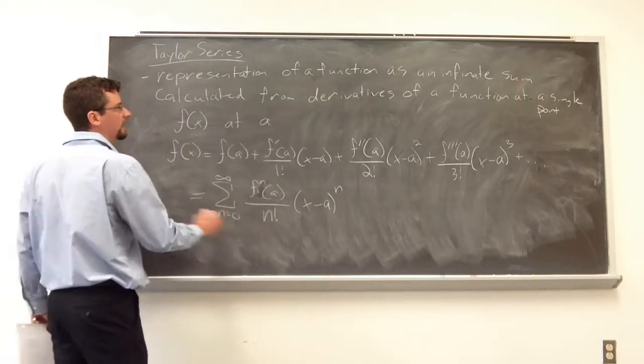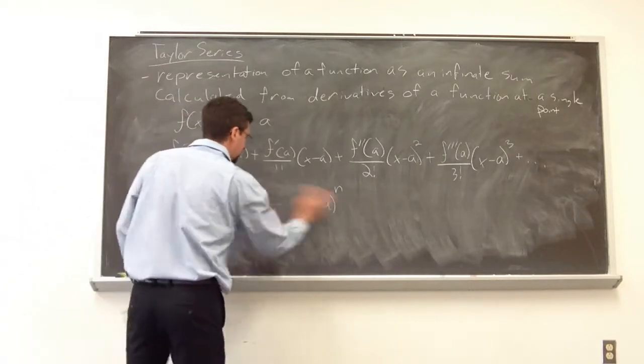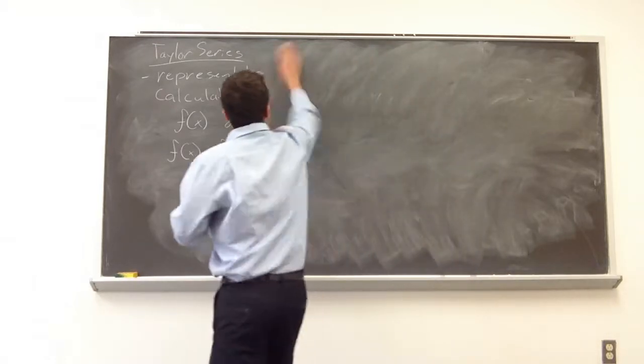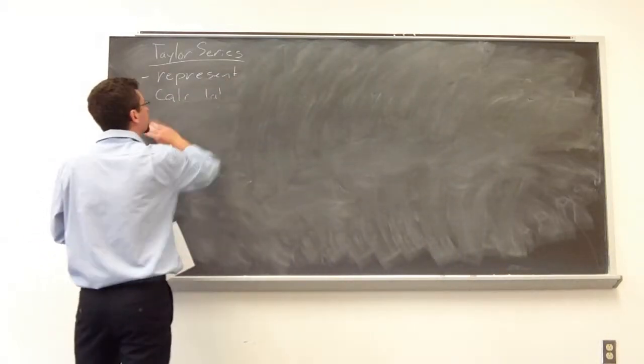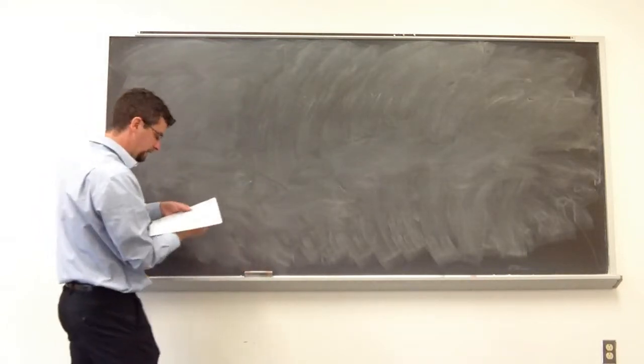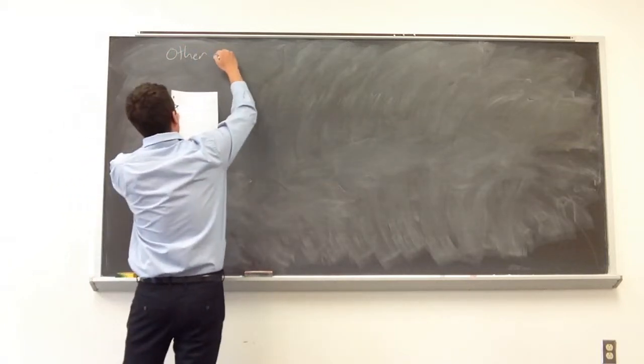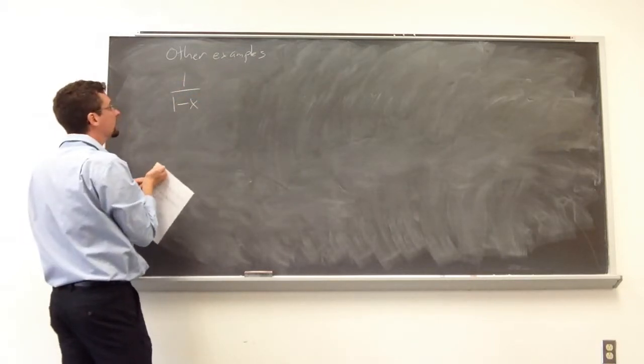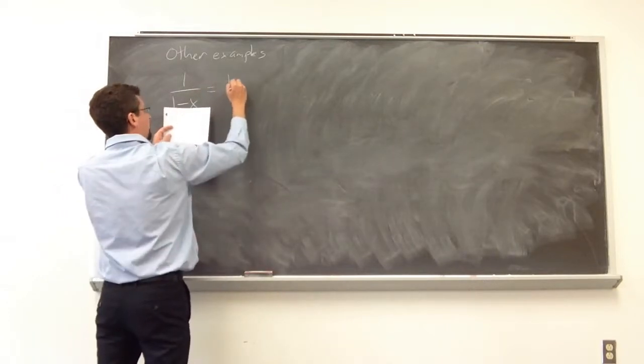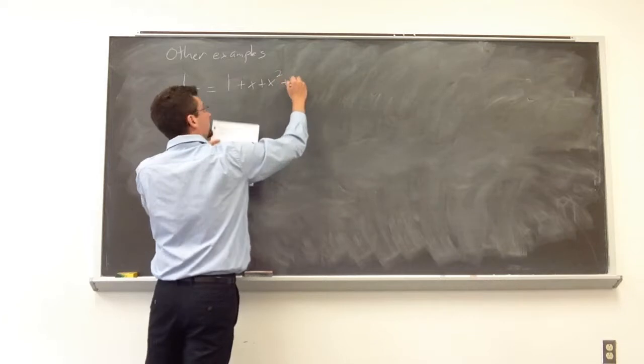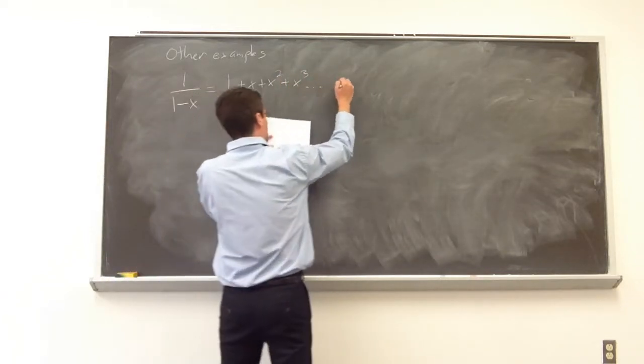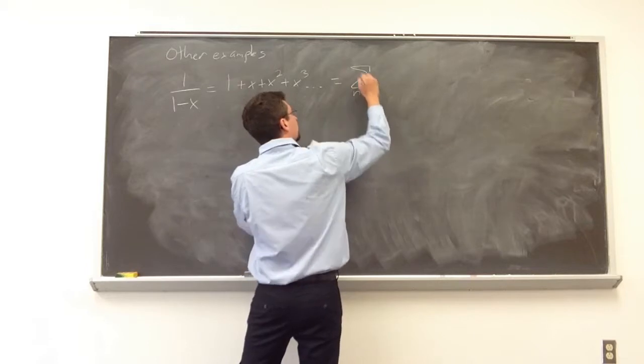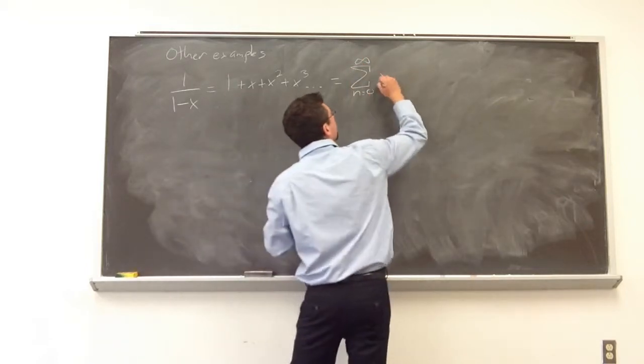Other examples you've probably seen some of these other series before, and they end up being quite useful, not only in thermodynamics, but eventually when we start discussing quantum mechanics, these pop up from time to time. So other examples, we could represent 1 over 1 minus x as the following series: we have 1 plus x plus x squared plus x to the third, and so on, and that would be equivalent to summation n is equal to 0 as we go to infinity x to the n.